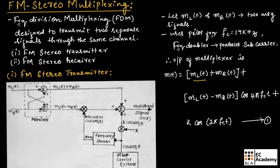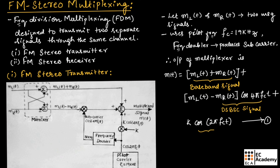In equation 1, ML(t) plus MR(t) is known as the baseband signal. ML(t) minus MR(t) multiplied by cos(4π·Fc·t) is the DSBSC signal, and K·cos(2π·Fc·t) is the pilot carrier signal. So the output of the FM stereo transmitter produces three signals: the baseband signal, the DSBSC signal, and the pilot carrier signal.